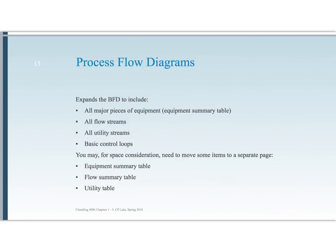A process flow diagram is similar to a block flow diagram, but it expands upon it to include all the major pieces of equipment and every flow stream. It also includes utility streams — so if I need steam to heat my reboiler, I'm going to draw that steam line; if I need cooling water for a chiller, I include that too. Basic control loops are also included, though this is not a complete control system — just the key items. Because these things get complex very quickly, some items may move to separate pages, such as the equipment summary table, flow summary table, or utility tables. All of those things need to be included, but they may not be in the diagram itself unless it's a fairly simple system.